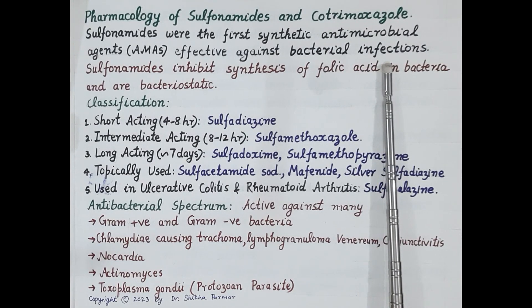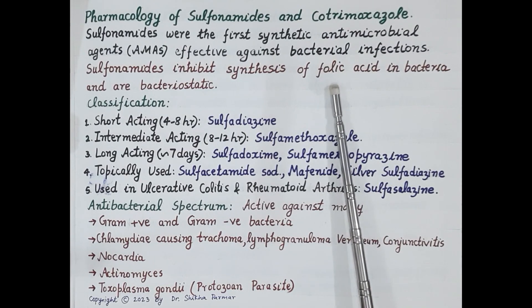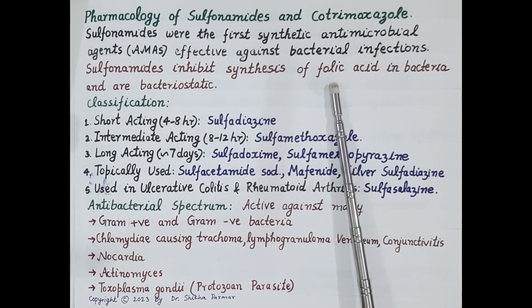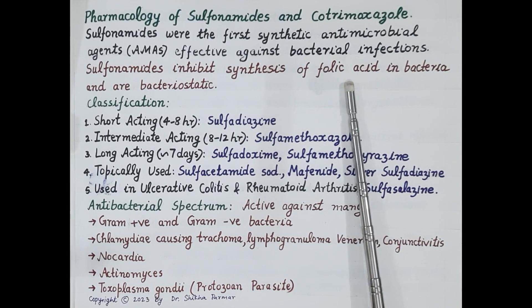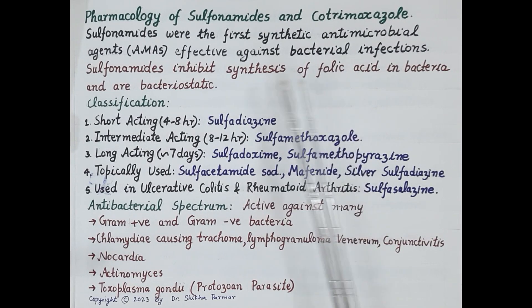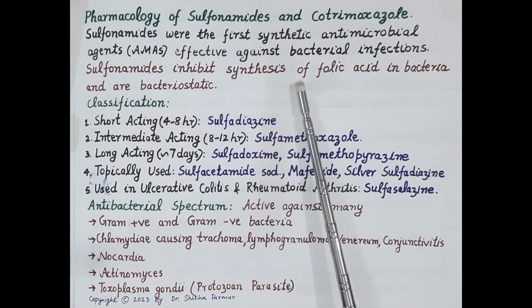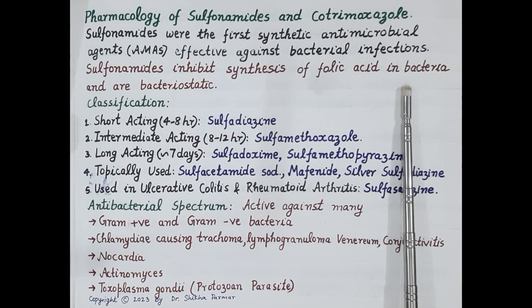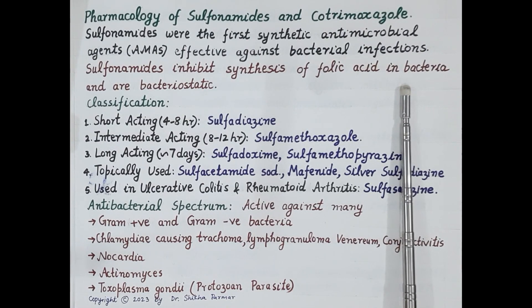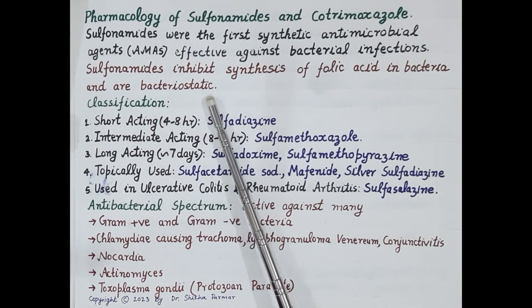It is very important to remember that bacteria synthesize their own folic acid, while humans get folic acid from diet. This folic acid is essential for the synthesis of purines and pyrimidines, which are the building blocks of DNA. Sulfonamides inhibit synthesis of folic acid in bacteria, which inhibits synthesis of DNA and thus prevents bacterial growth. Since sulfonamides inhibit growth of bacteria, they are termed as bacteriostatic.